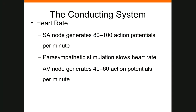The SA node generates 80 to 100 action potentials per minute — more than the AV node. The AV node generates 40 to 60 action potentials per minute. The autonomic nervous system can influence this heart rate: parasympathetic stimulation slows the heartbeat, while sympathetic stimulation increases it.